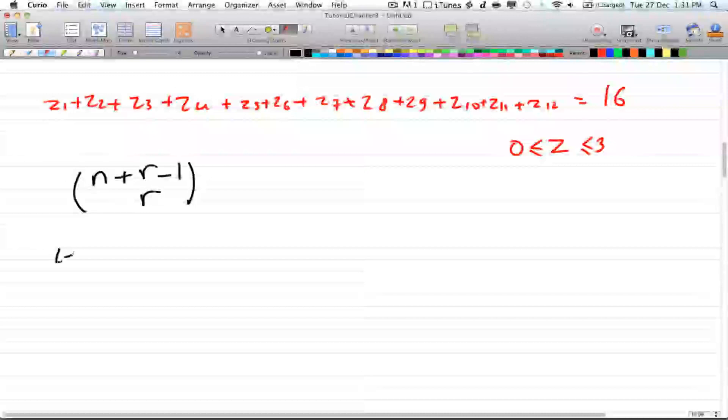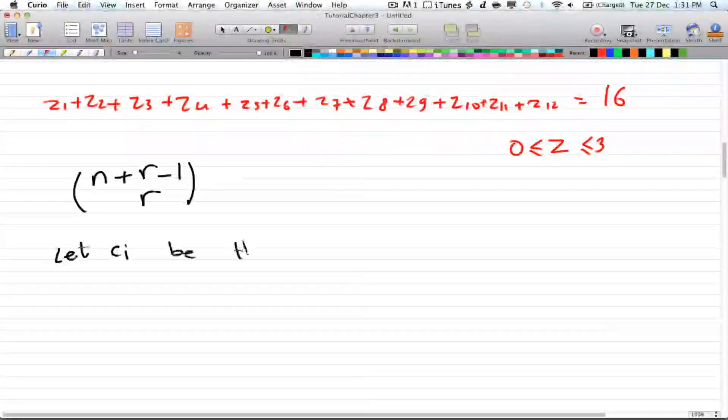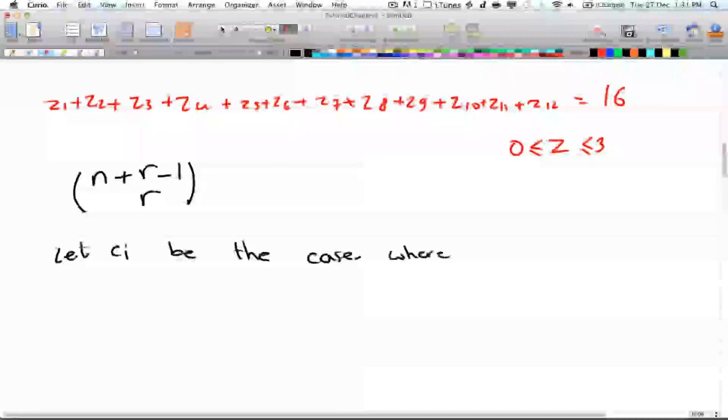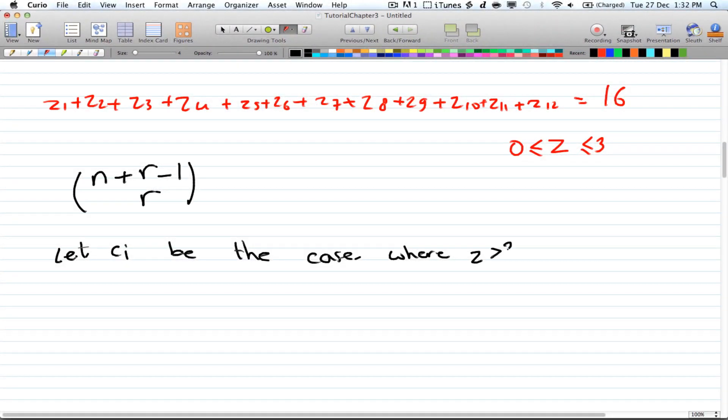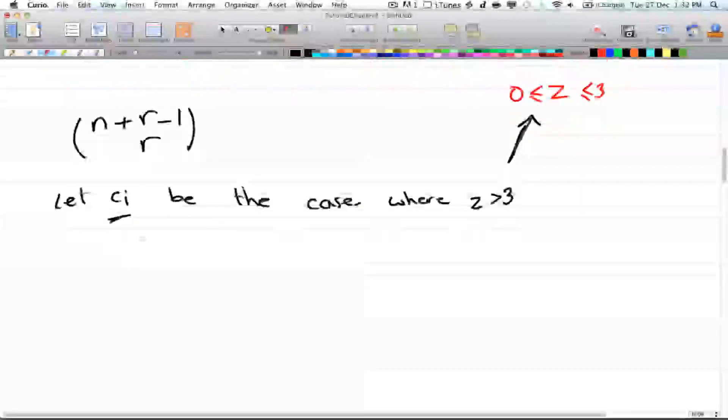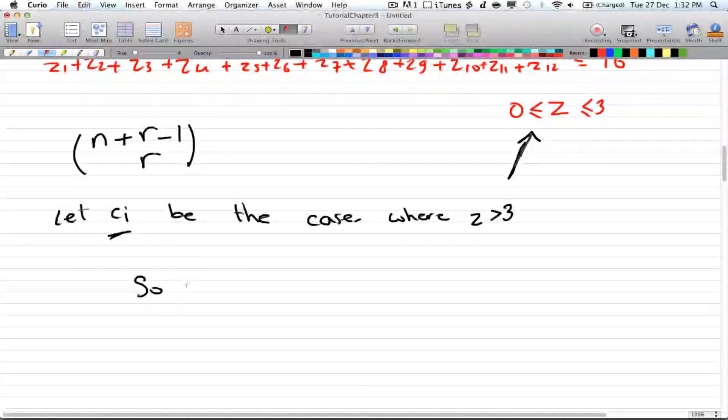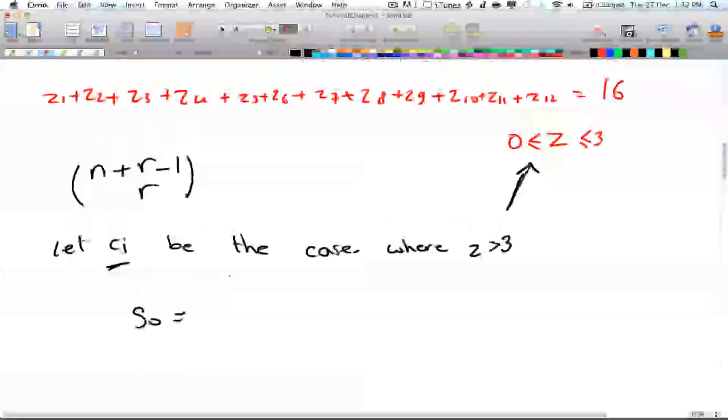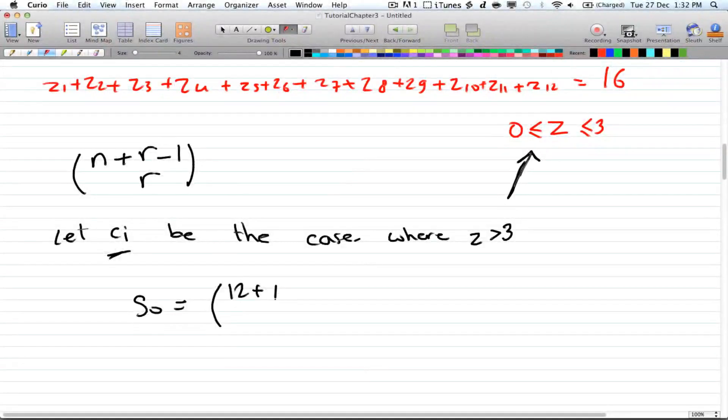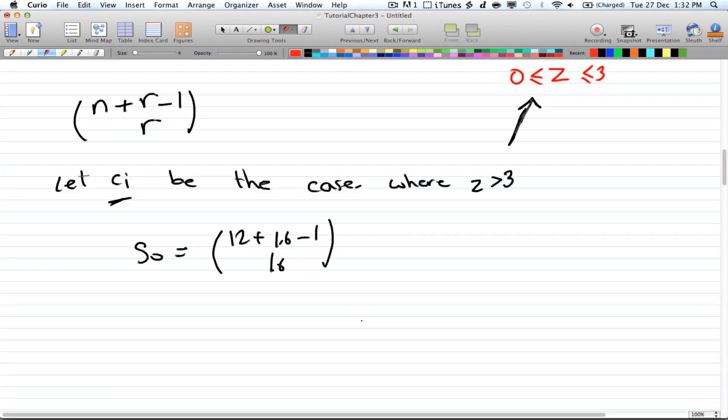Let's see i be the case where z is greater than 3. So what we're doing is we're going the exact opposite of this condition here. So if it's greater than 3, then the minimum it can be is 4. So all you're going to do is subtract 4 for each time you choose a ci. So you have s0, which is the total sum with no c's, so there are no restrictions. You're going to have the number of variables plus the result minus 1, choose the result.